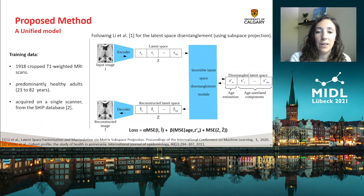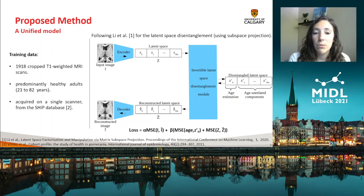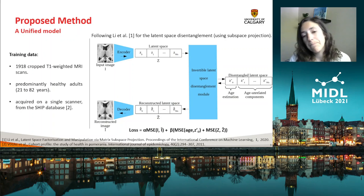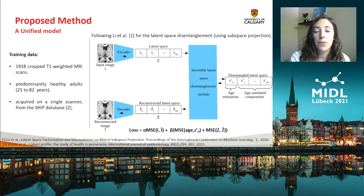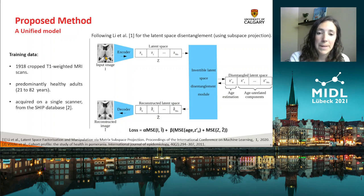Here you can see the architecture of the proposed model. To train it, we used about 2,000 T1-weighted MRI scans from predominantly healthy adults, all acquired on a single scanner as part of the SHEEP study. The MRI brain scans were pre-processed and cropped to a region around the brain ventricles, which is known to be highly impacted by aging, so the input images are three-dimensional.